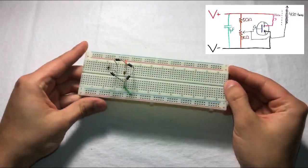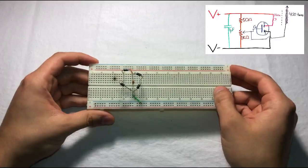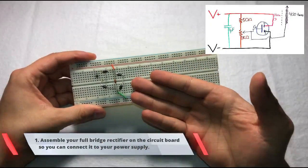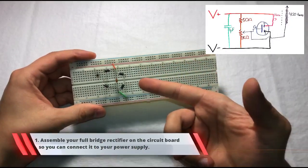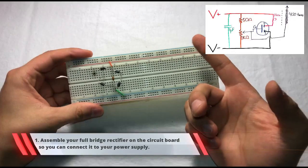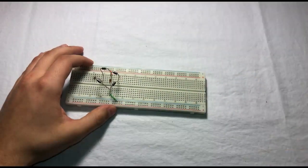So now we have our breadboard which we're going to be building our circuit on. So I just have my full bridge rectifier here so I can connect a transformer so I can supply the power to the circuit. So I'll just leave that there.